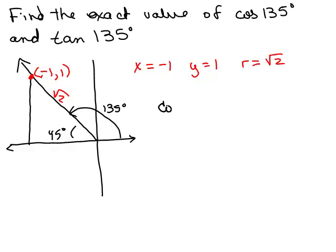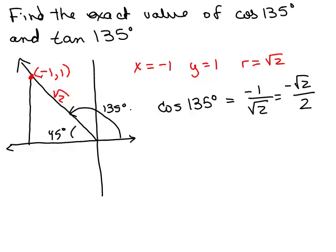Cosine of 135 degrees is X over R, so it's negative 1 over square root of 2. Rationalizing the denominator gives negative square root of 2 over 2. The tangent of 135 degrees is Y over X, which is 1 over negative 1, or negative 1.